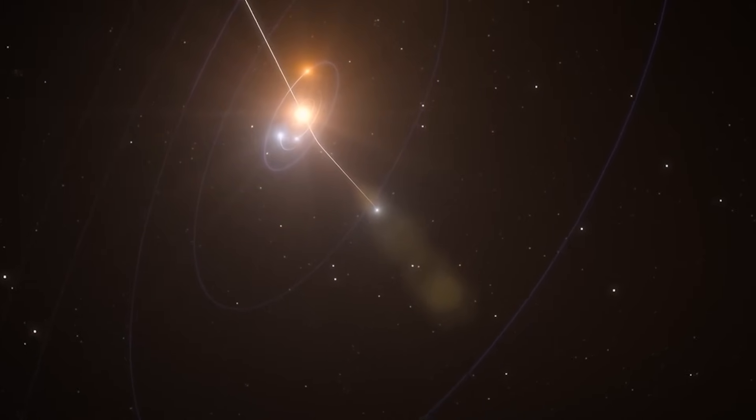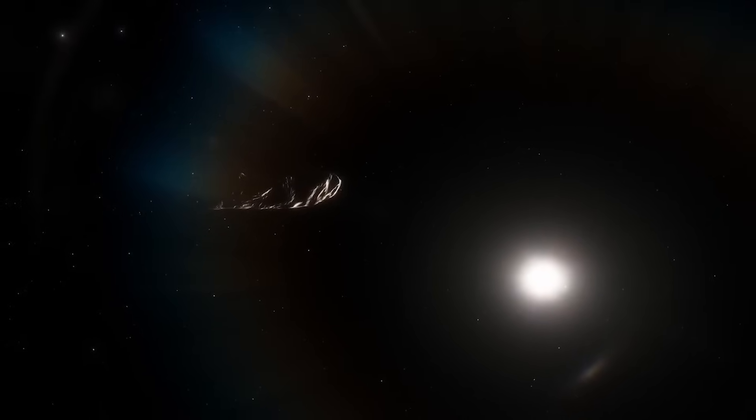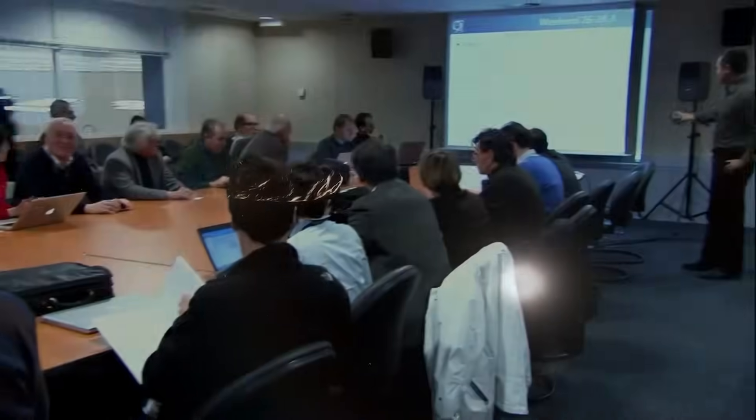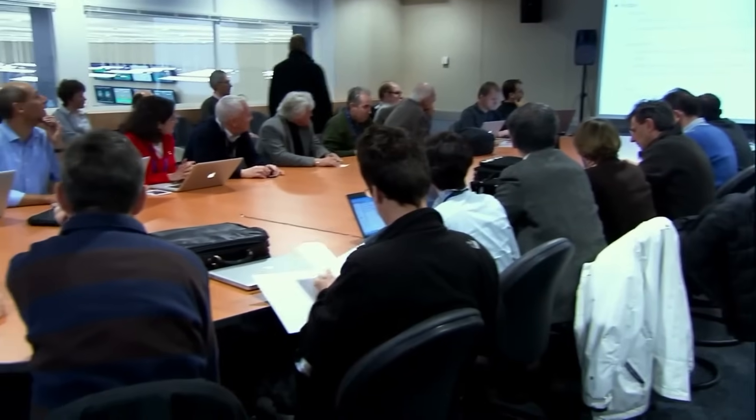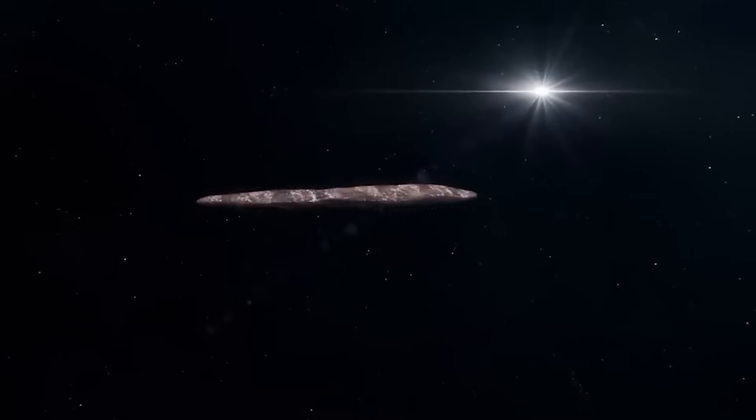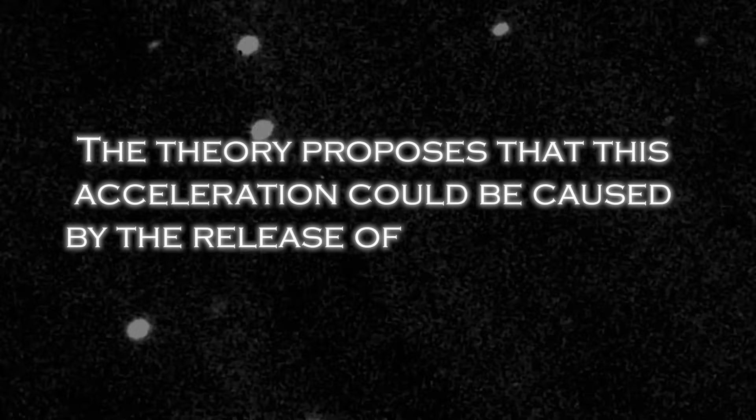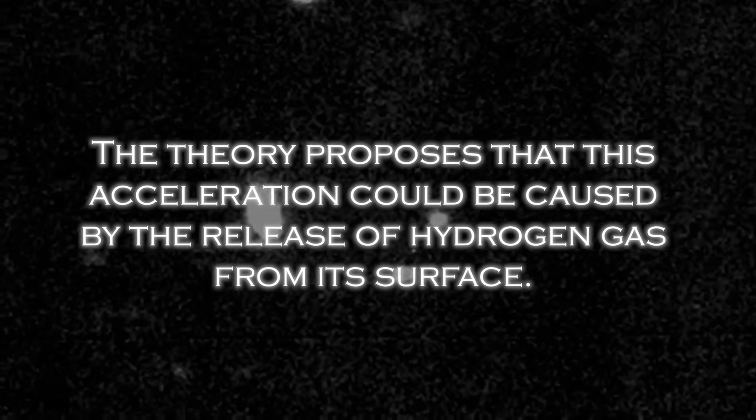In 2023, two astronomers saw Oumuamua approaching Earth and decided to collaborate on an investigation in which they posited a possible return with disproportionate acceleration of this mysterious object. The theory proposes that this acceleration could be caused by the release of hydrogen gas from its surface.